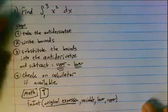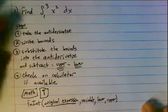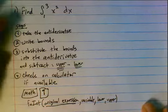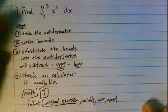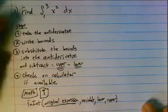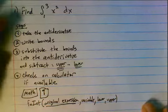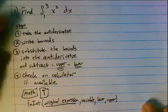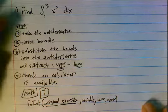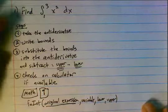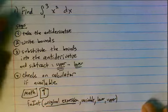To check on the calculator: Math 9, put in x squared as the expression, x as the variable, 1 as the lower bound, 3 as the upper bound. Converting to a fraction gives exactly 26 thirds — same as what we got, so we check that off.